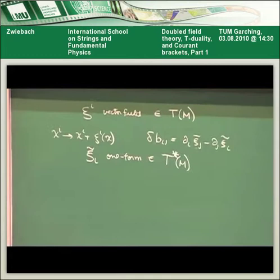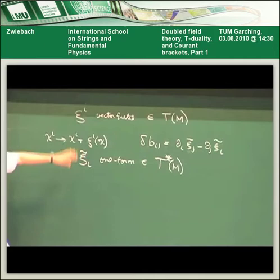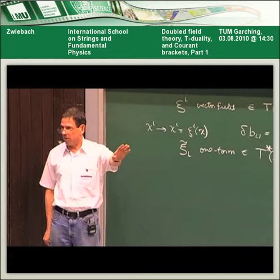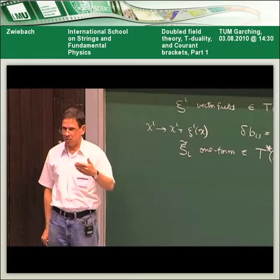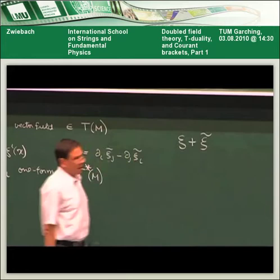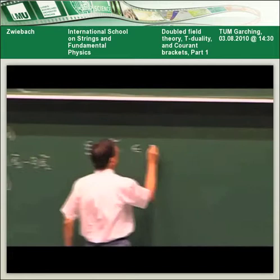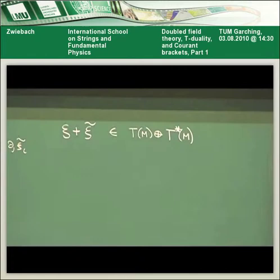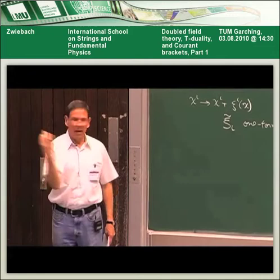What generalized geometry does is sum these two things together. You can always tell whether an object is a vector or a one-form unambiguously, so there's no problem in adding them. We can call a generalized parameter ξ + ξ̃, and this thing therefore belongs to the direct sum of those vector bundles. You work with these two things together — treating diffeomorphisms and the other gauge invariances together.